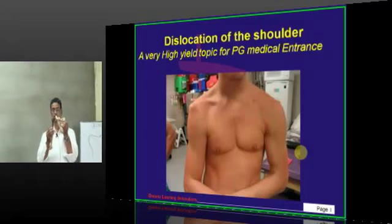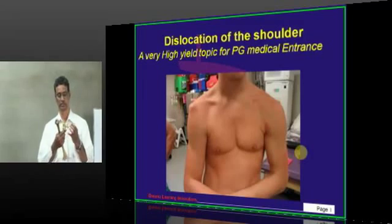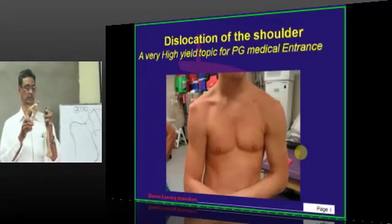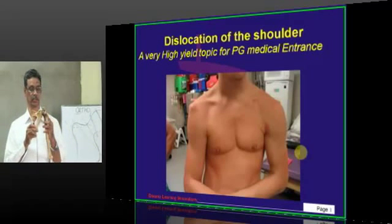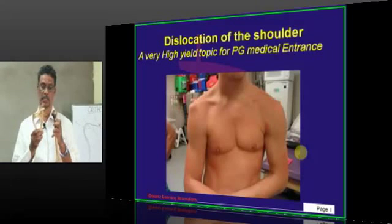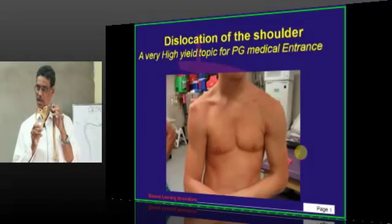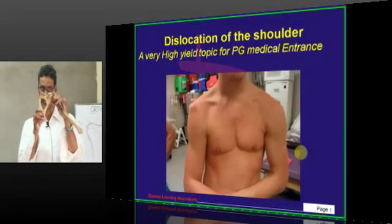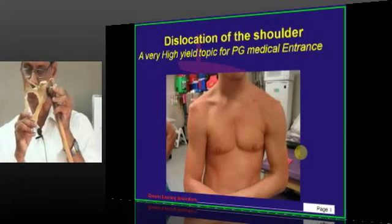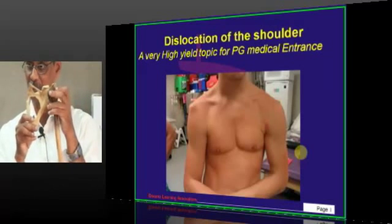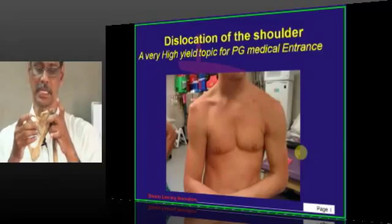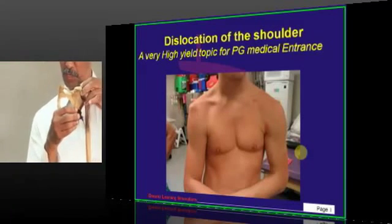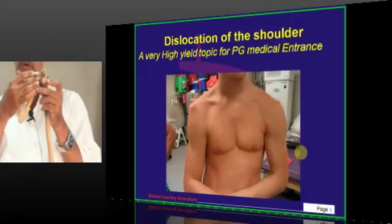As everybody knows, this is the shoulder joint — a ball and socket joint. However, the ball is very large compared to the socket. At any time, only one third of the ball has attachment with the socket. The ligaments are not as strong as those of the hip joint; there are only a few ligaments, and the entire coverage of the shoulder joint is provided by the muscles.